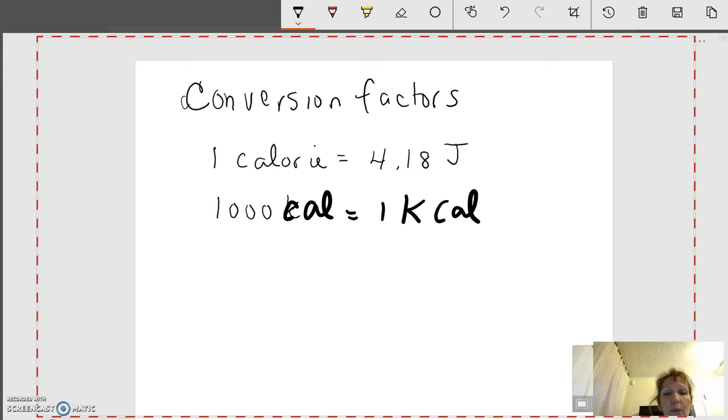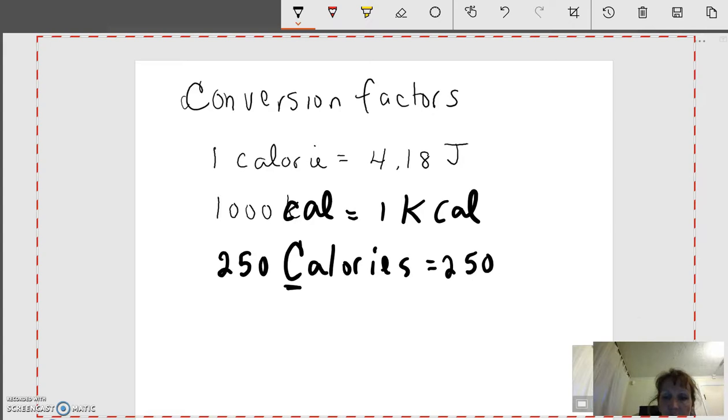You know when you read the food labels, it'll say it's 250 calories. You should notice that that type of calorie is a capital C. And that's really 250 thousand little calories, abbreviated CAL with lowercase.